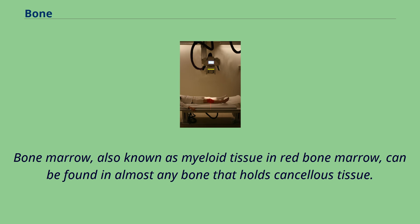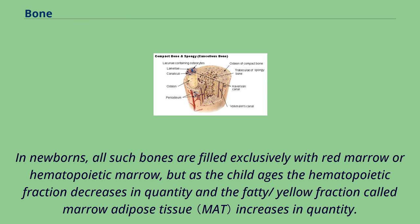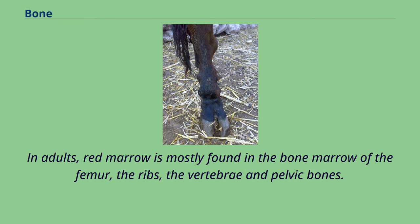Bone marrow, also known as myeloid tissue in red bone marrow, can be found in almost any bone that holds cancellous tissue. In newborns, all such bones are filled exclusively with red marrow or hematopoietic marrow, but as the child ages, the hematopoietic fraction decreases and the fatty yellow fraction called marrow adipose tissue increases. In adults, red marrow is mostly found in the bone marrow of the femur, the ribs, the vertebrae, and pelvic bones.